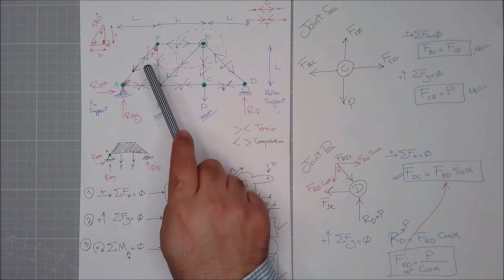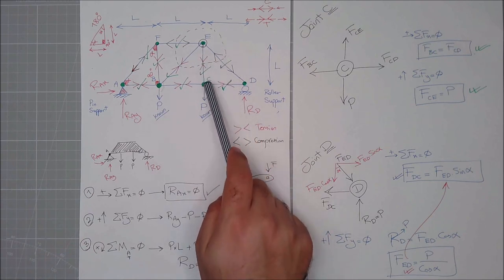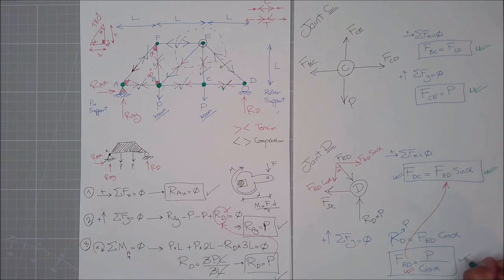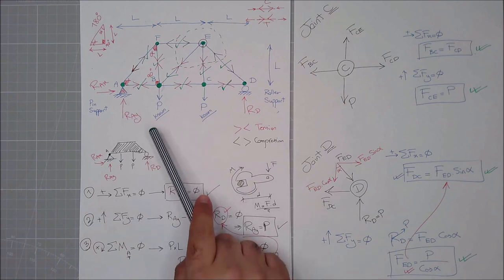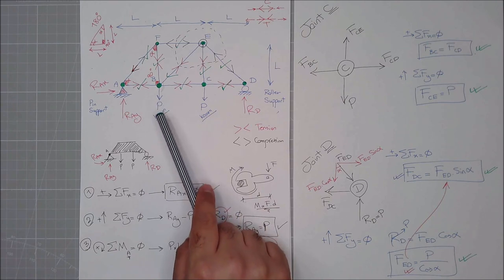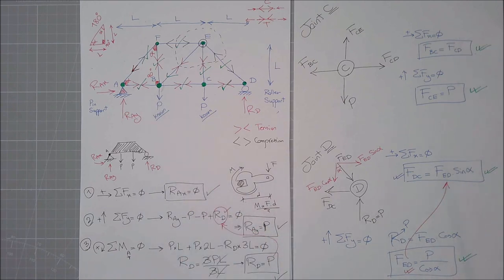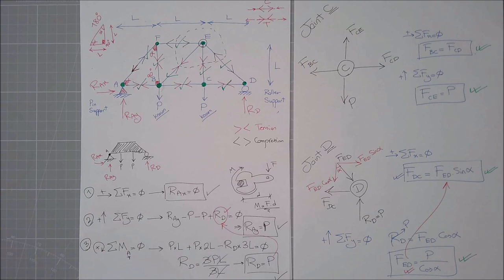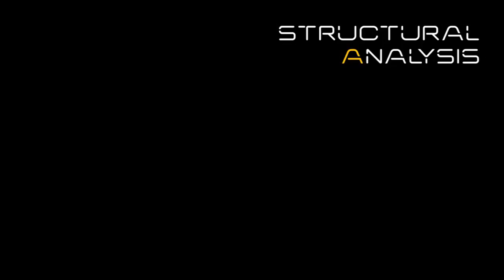Now you have calculated every single actual force in every single member of this truss. If they are positive, that means the initial assumption was correct. It seems like everything is going positive, so there is a high chance these members are under tension while others are under compression. As you've noticed, it took about 40 minutes to solve this structure using the method of joints. Now let's go to part two and see how to solve this through the method of sections.